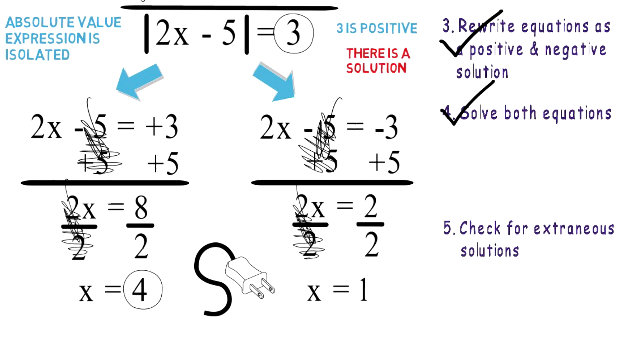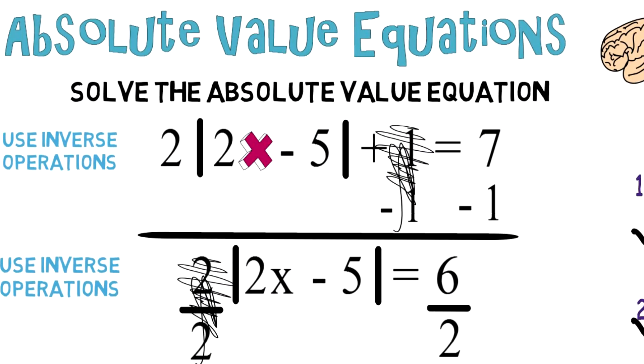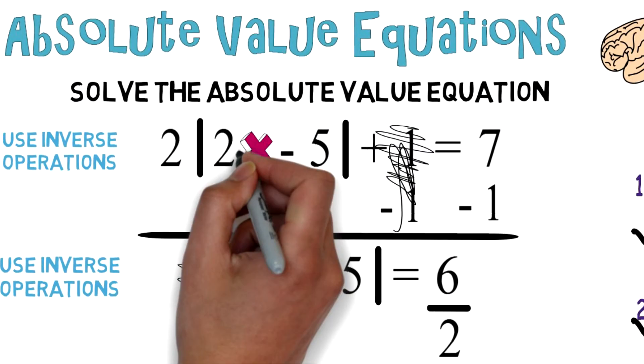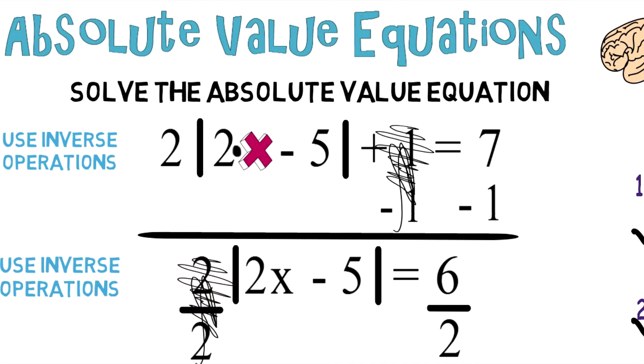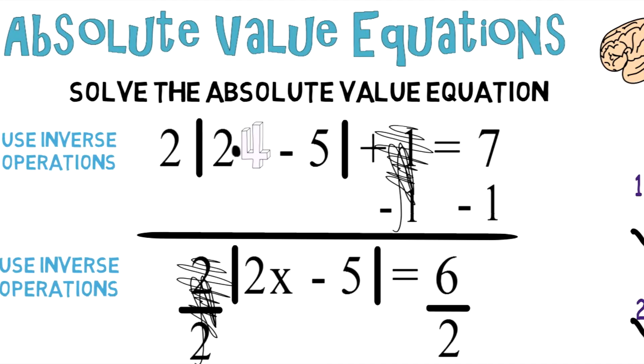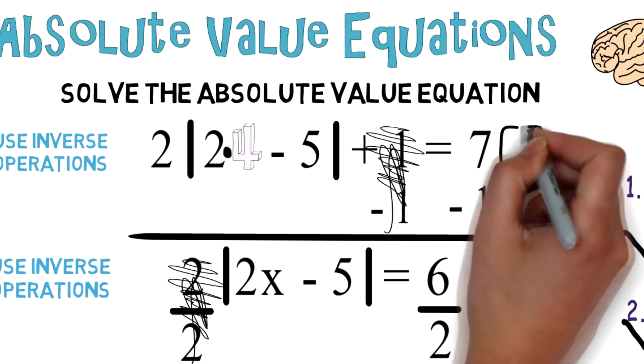So we'll take four, we're going to plug it in. And let's not forget it's two times x, so it's two times four. And if you work that out, it's going to work out. Eventually, it's going to equal seven.